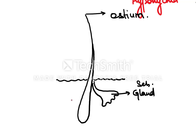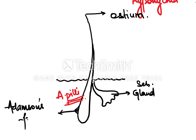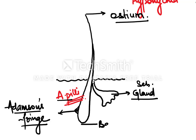Below the opening of the sebaceous gland there is the attachment of the erector pili muscle. Then there is a bulge area — this bulge area of the hair root is known as Adamson's fringe. So the key landmarks are: the osteum at the tip, then the opening of the sebaceous gland, then the attachment of the erector pili muscle, then Adamson's fringe, and finally the base of the hair follicle.